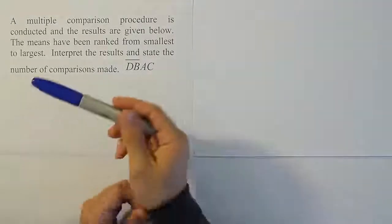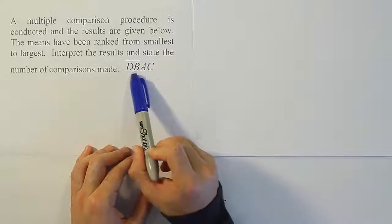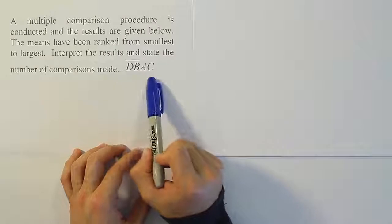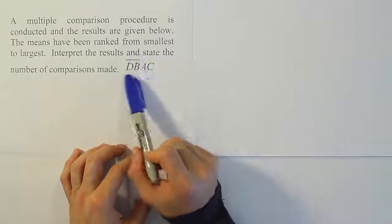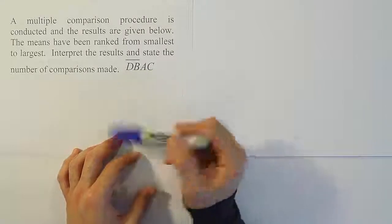So we're given this result that D and B are joined together, A and C follow after that on the right-hand side. And what we want to do first is identify how many comparisons were made. When we're finished with that, we'll interpret the diagram we see here.